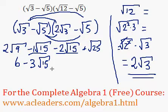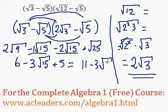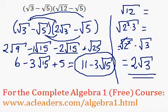And finally, root 25 is just 5. So 6 plus 5 is 11. So we get 11 minus 3 root 15. And that is the fully simplified form of this expression. That's it.